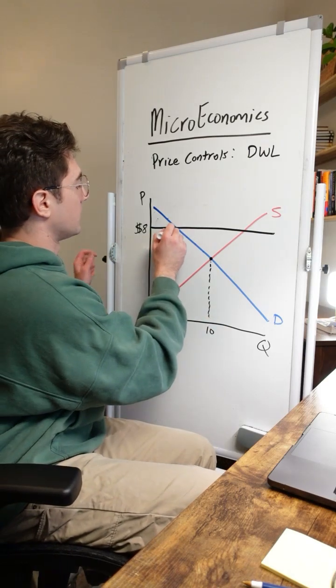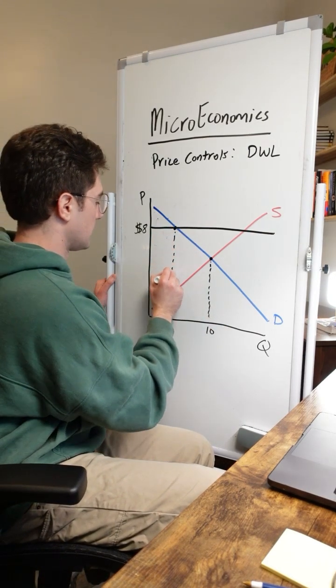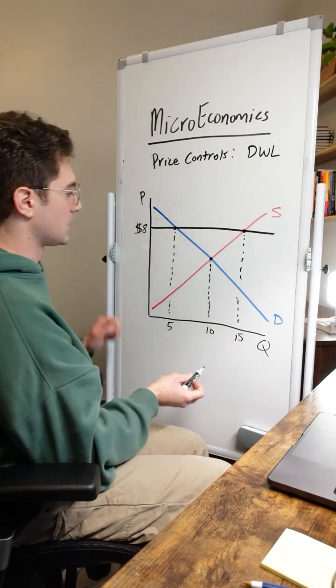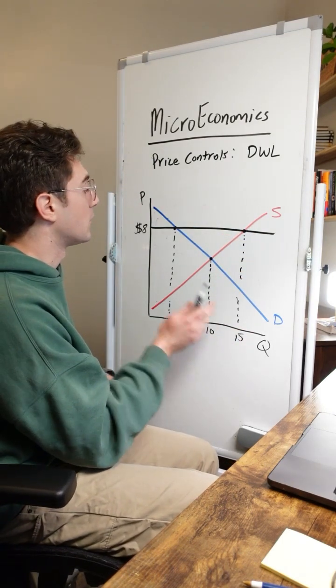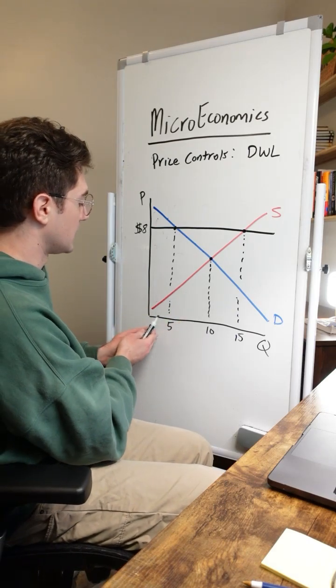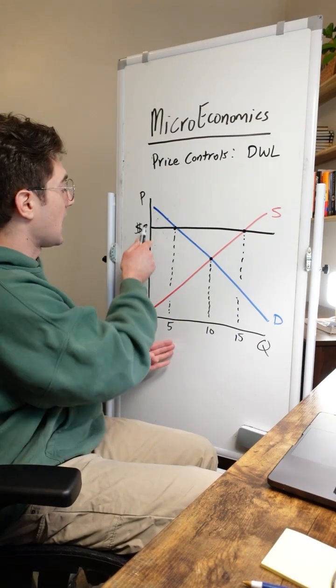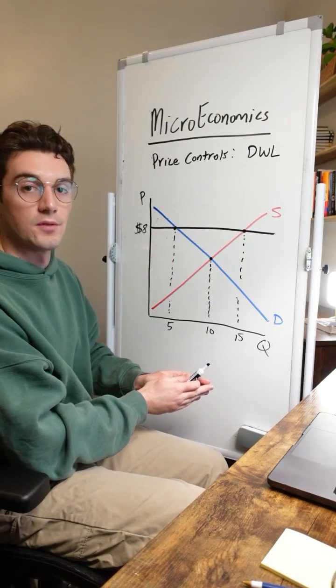So what's going to happen now is that consumers are going to demand, we'll say, five units, but producers are going to want to sell, we'll say, 15 units. The 15 doesn't really matter here for deadweight loss because what matters is understanding that now no more units than five are going to get sold. Because at eight bucks, consumers are not willing to buy more than five units.